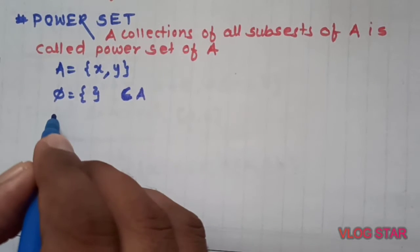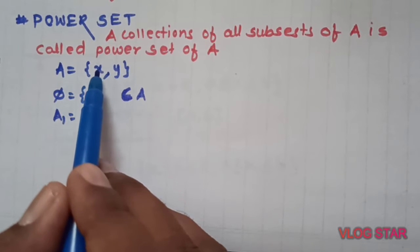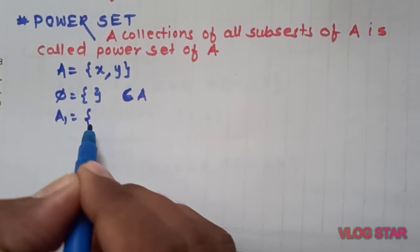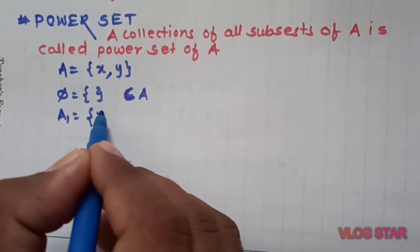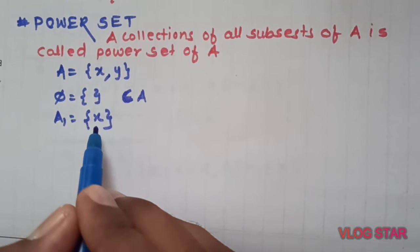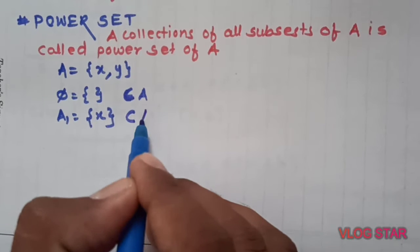Suppose I have a set A which has members x and y. We will try to write all subsets of A. First set is empty set phi. Second, A1.